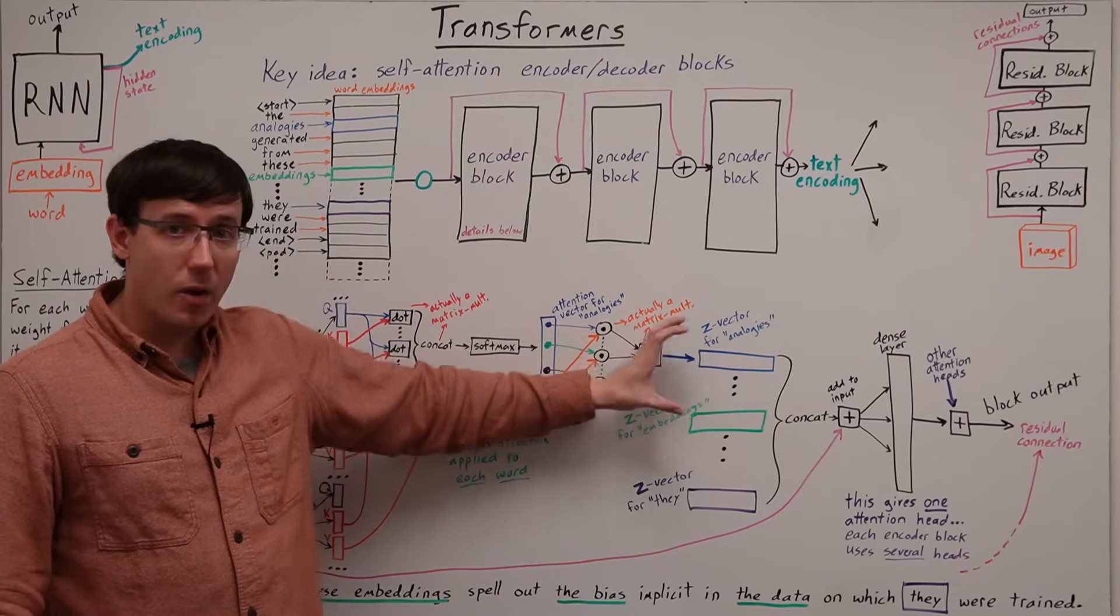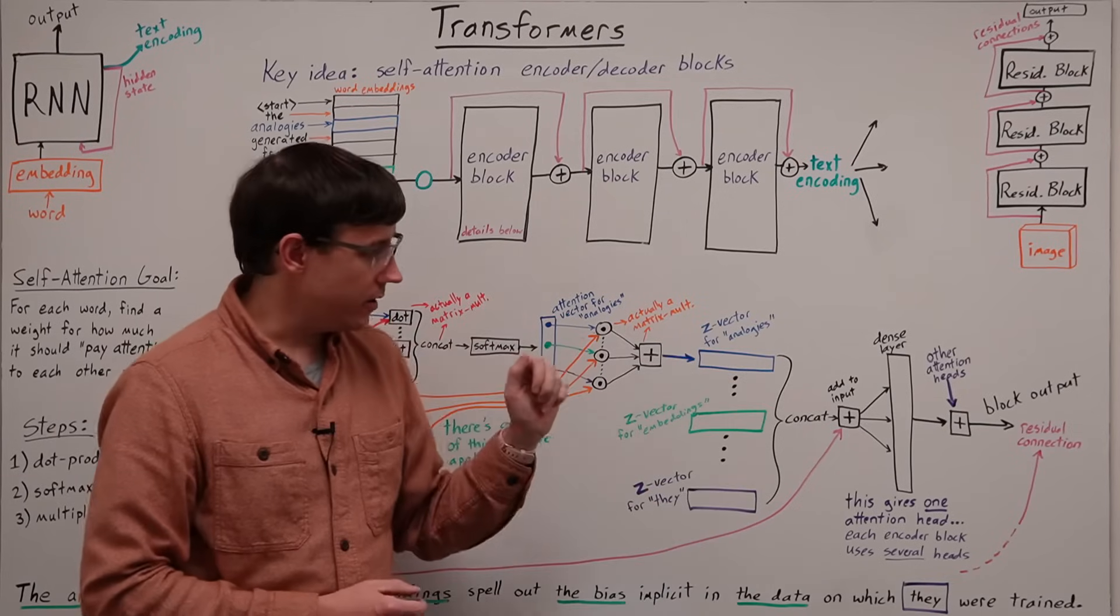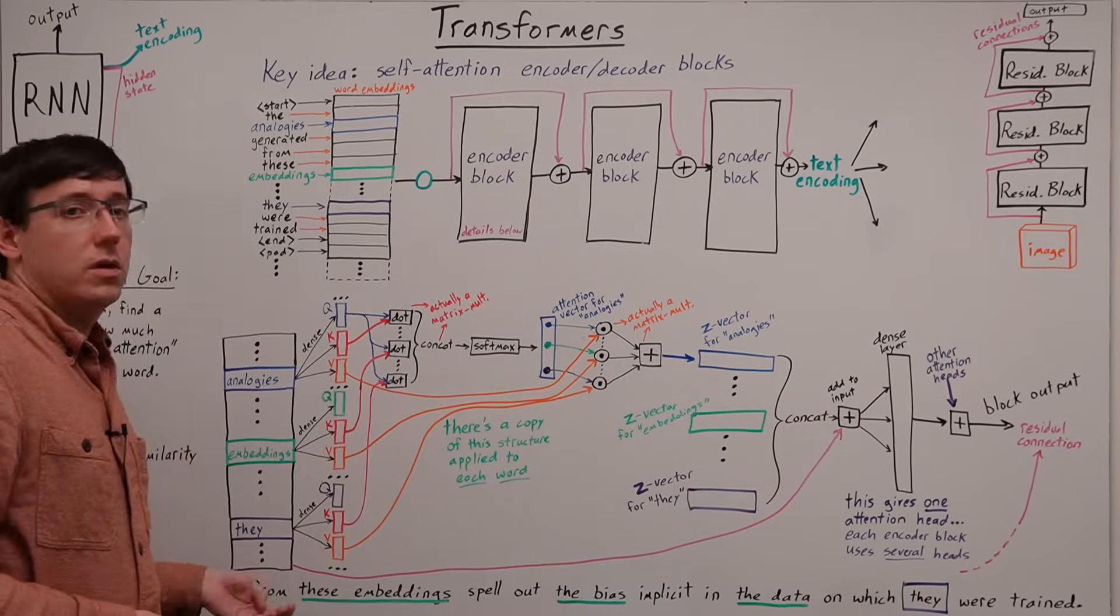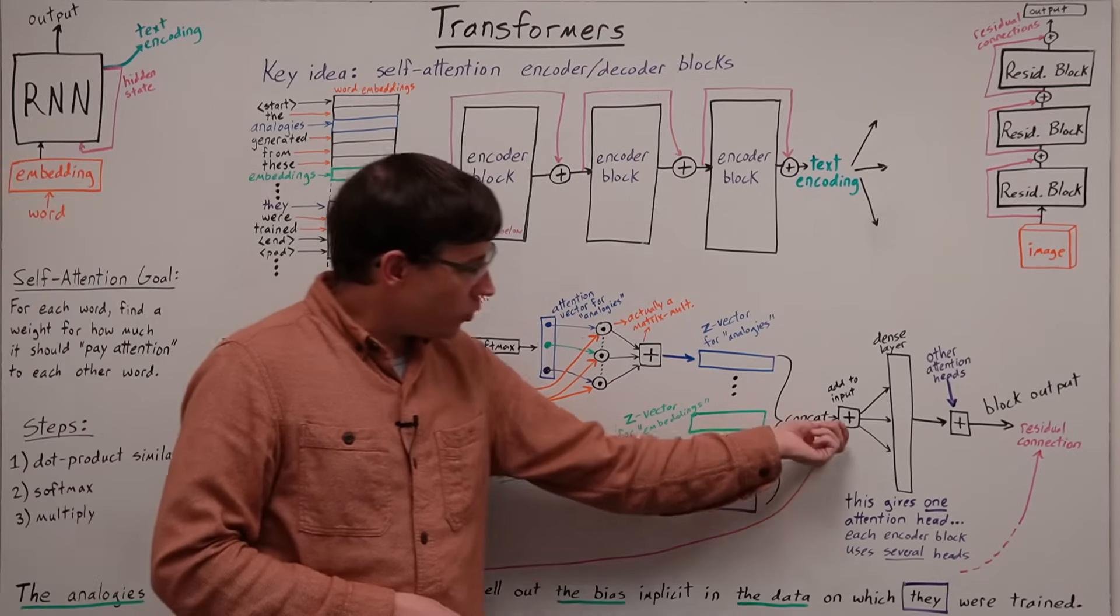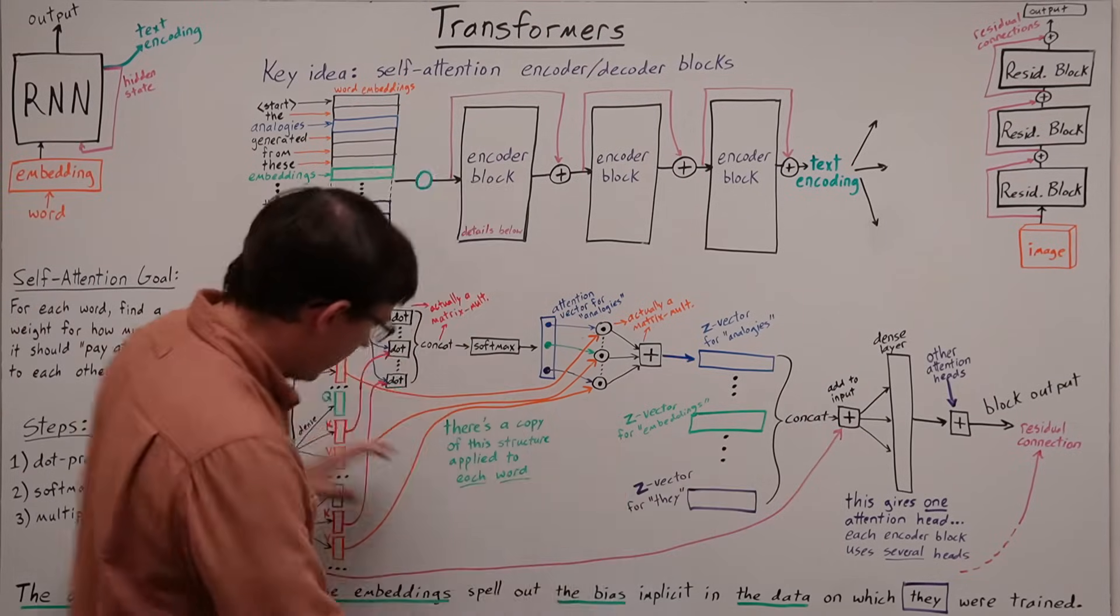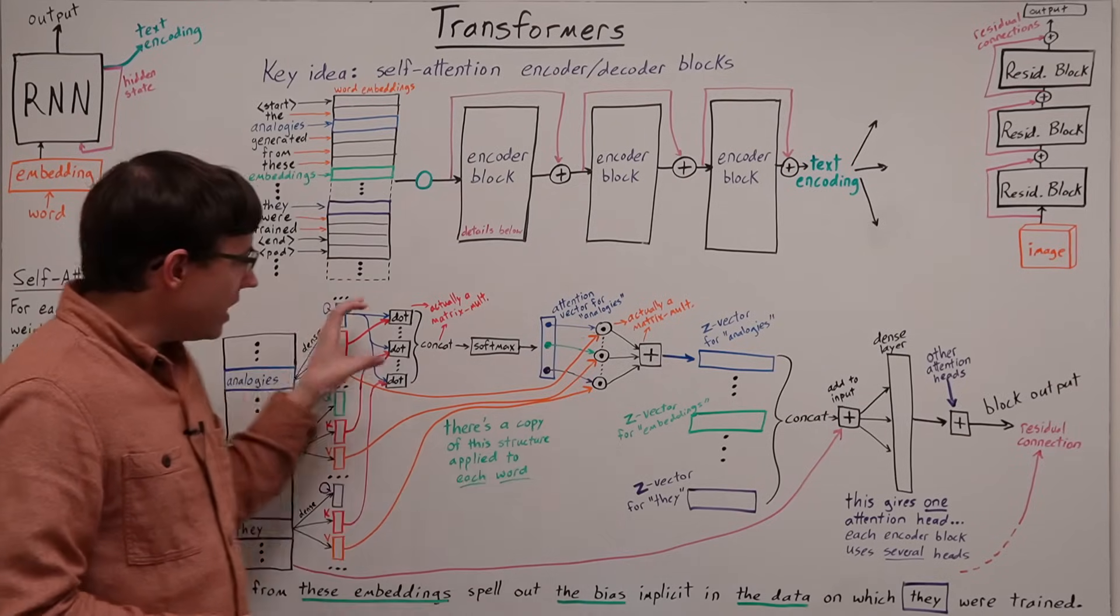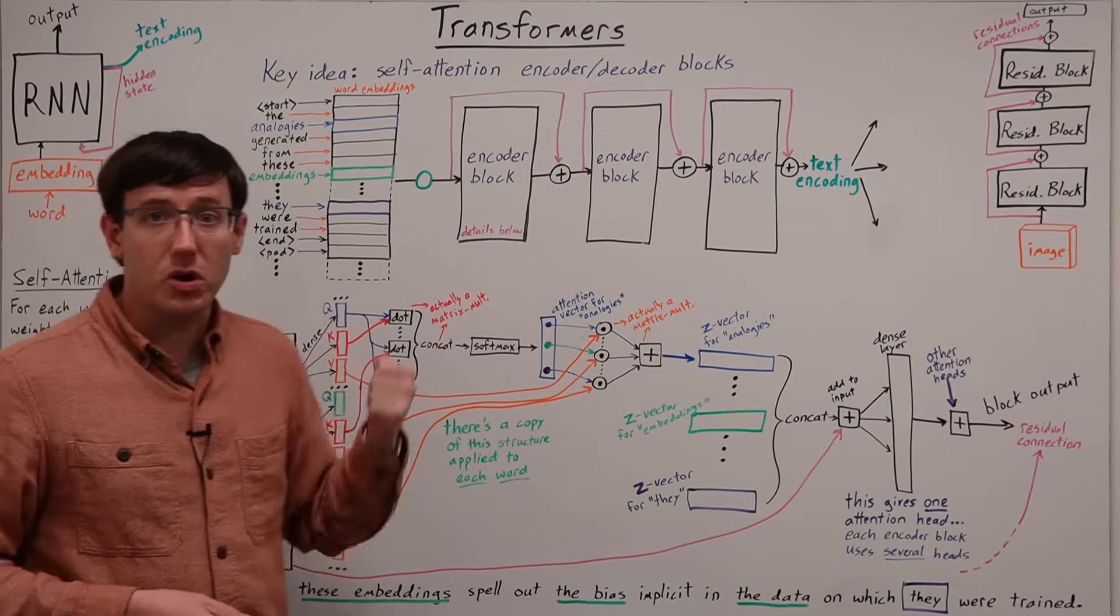and we will now add this information that came from the entire document onto the original embedding. So we have now taken the original words and added to each word content that came from the entire document, but based on how we decided to pay attention to the different parts of the document.